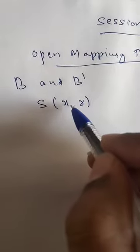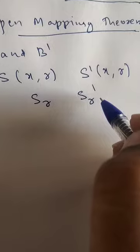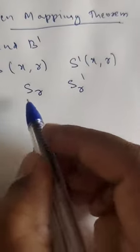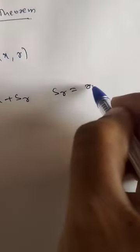Suppose B and B' are Banach spaces. S(X, R) denotes the open ball with center at X and radius R in B, and S'(X, R) denotes the open ball with center X and radius R in B'. Also, S_R denotes the open ball with center at the origin and radius R in B, and S'_R denotes the open ball with center at the origin and radius R in B'. Clearly, S(X, R) = X + S_R and S_R = R · S_1.